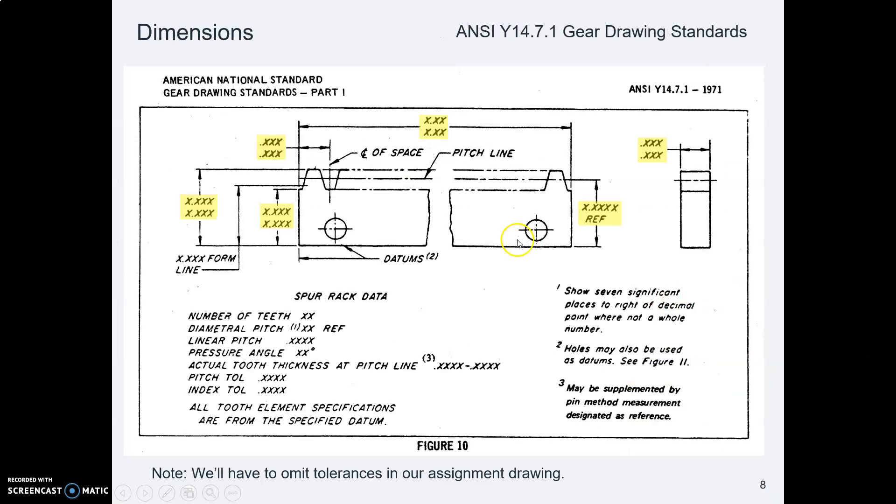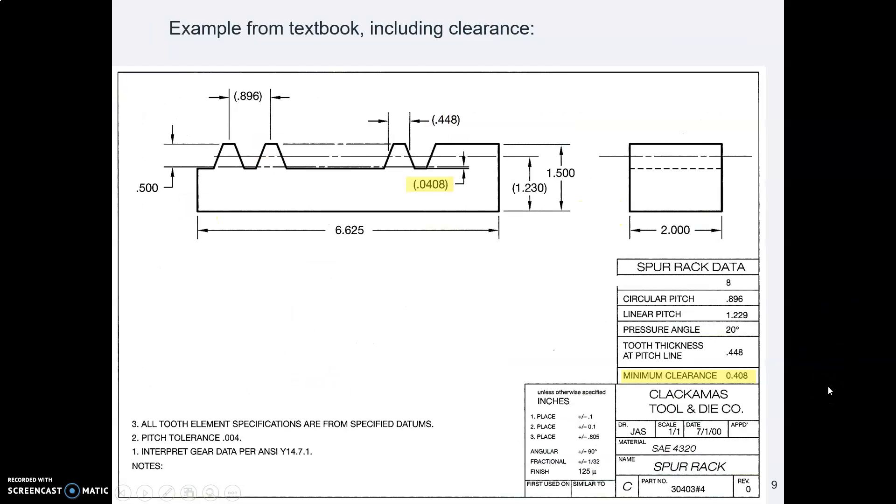I don't think that ANSI wants us to include that, and we will not include that in our drawing. I'm just pointing it out to you. So clearance is the space between the mating spur gear tooth and the bottom of the rack.